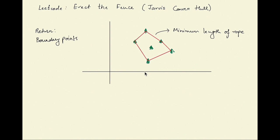Hi everyone, in this video we are going to discuss the LeetCode problem 'Erect the Fence'. This problem is marked as hard on LeetCode. The underlying algorithm behind this problem is known as Jarvis convex hull algorithm. Basically, the problem is: in a 2D plane you have some trees and your job is to create a fence around those trees so that all the trees are included in that fence, and the length of the rope required to create that fence is minimum.